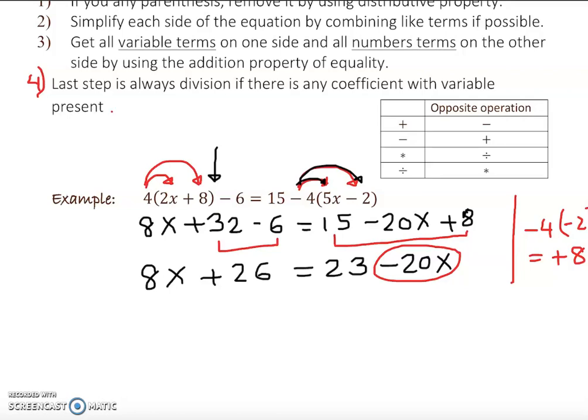So we're going to add 20x on both sides. If we do so, this gets canceled and 20 plus 8 will give us 28x plus 26 bring it down equal to 23. So we are making things narrowing down.